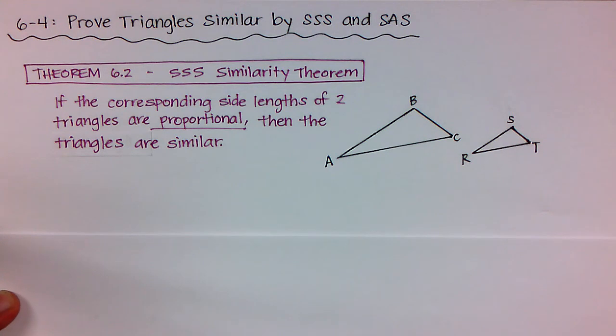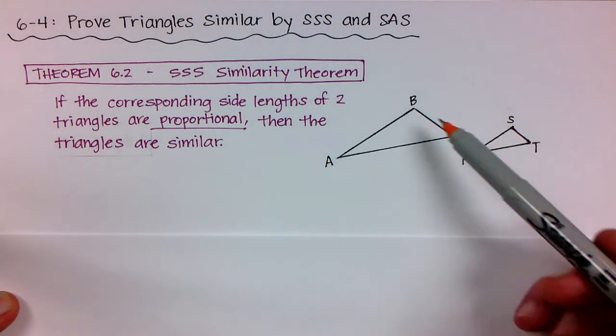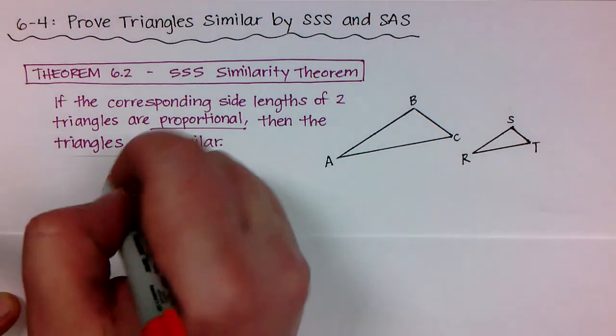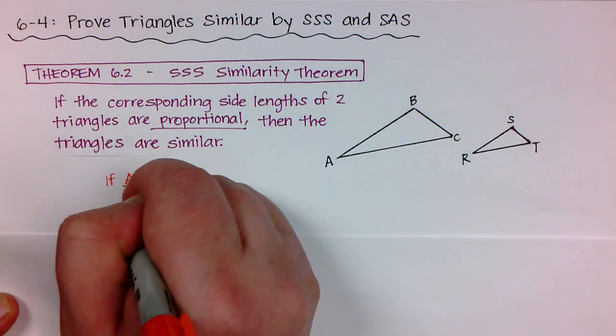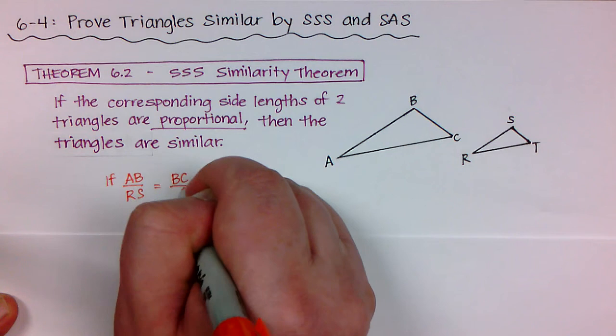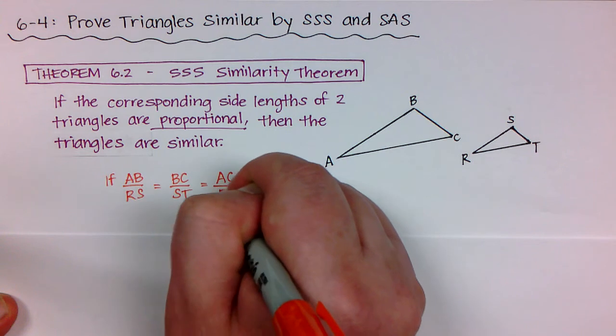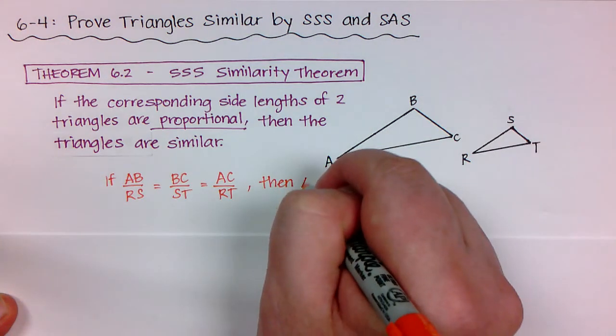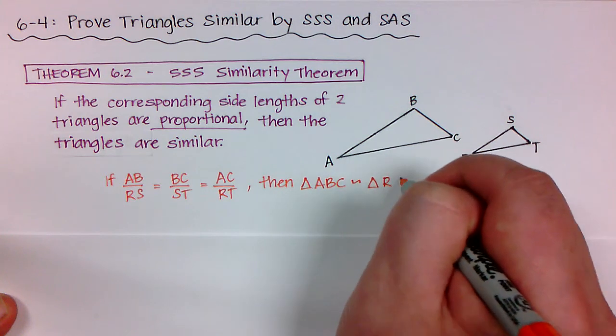So it's not saying that the side lengths have to be congruent, but it's saying that the proportions for all of the sides must be the same and then I can claim that the two triangles are similar. So in words I can say that if AB compared to RS is equal to BC compared to ST, and if that's also equal to the length of AC compared to RT, then I can claim that triangle ABC is similar to triangle RST.